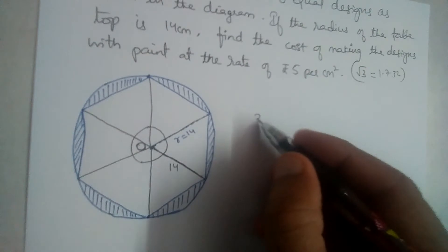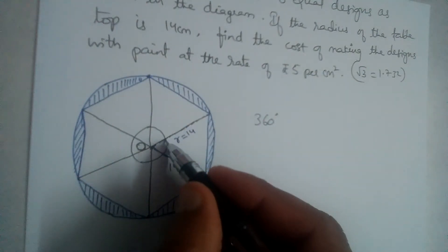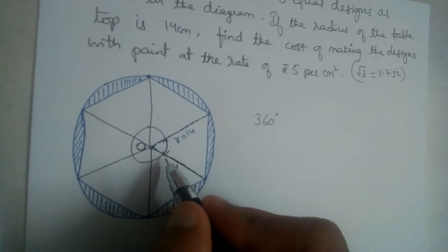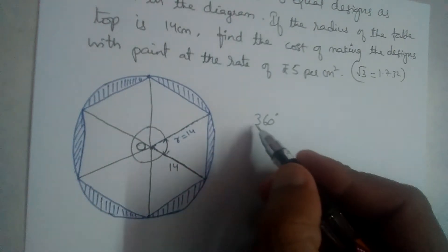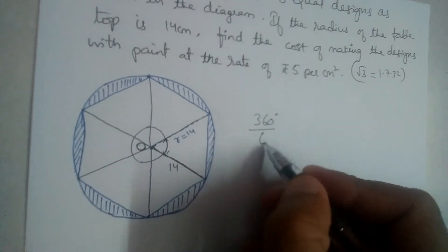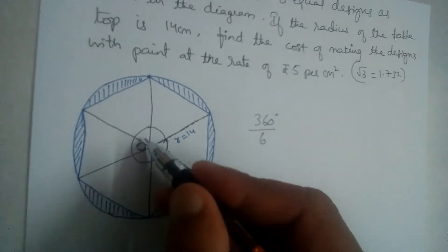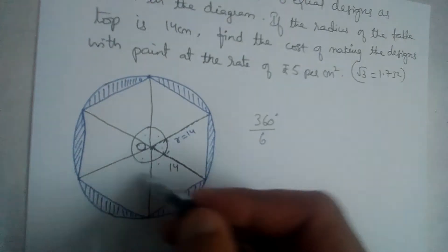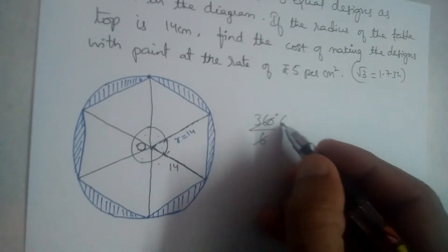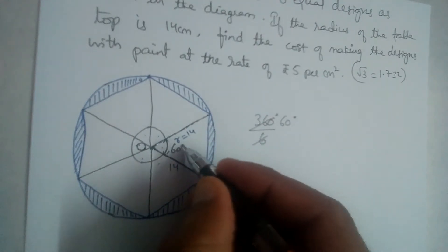So what will be each angle now? 360 divided by 6, because there are six equal angles, right? One, two, three, four, five, six. Six equal angles. So this will give us 60 degrees. Each one is 60 degrees.